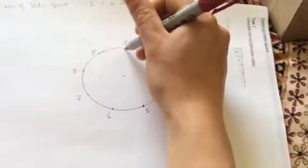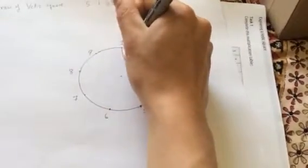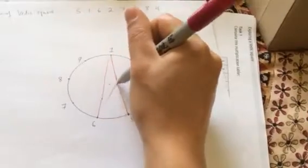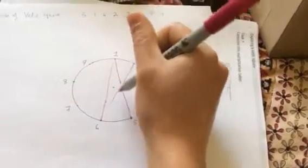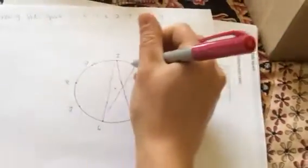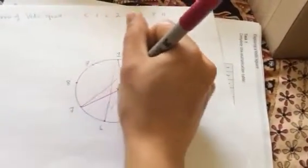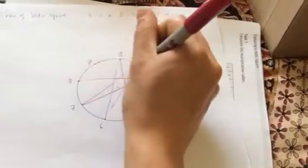So 5 to 1, draw a line. You might want to use a ruler if you prefer. And then 6 to 2, from 1 to 6, to 2, to 7, to 3, to 8, to 4.